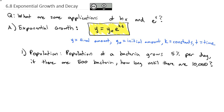Using our exponential growth equation, y is the final amount, 10,000. y sub 0 is the initial amount, 500. e to the k, that's our growth constant of 0.05. And t is the time we're looking for.